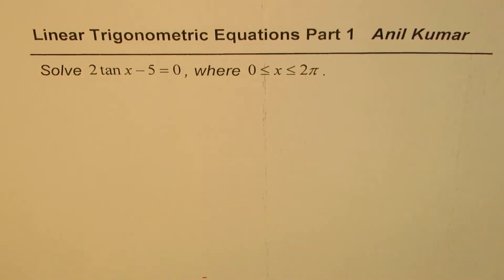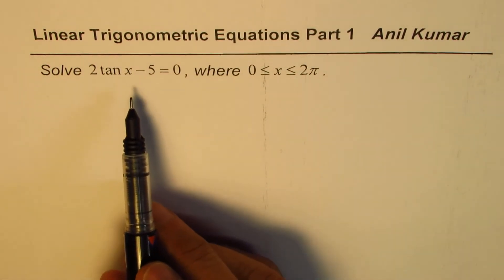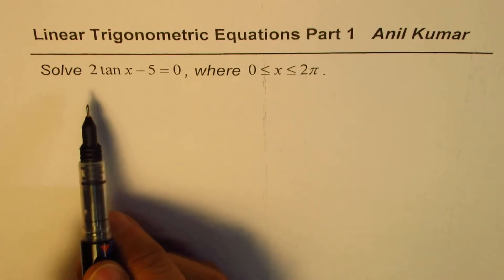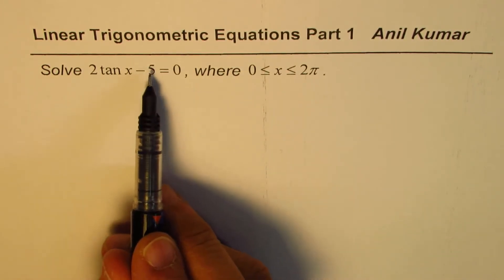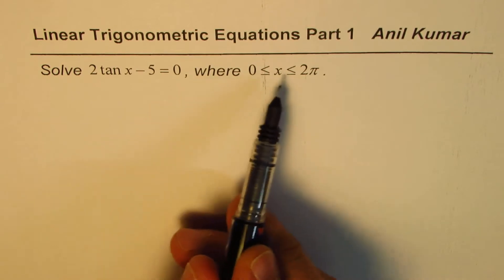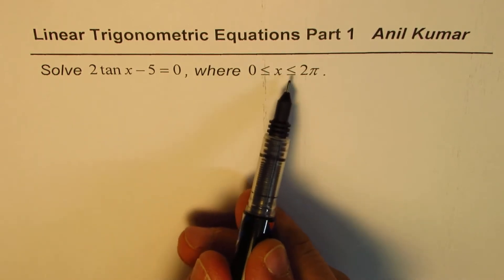I'm Manil Kumar. In this video, we will learn how to solve the linear trigonometric equation 2 tan x minus 5 equal to 0, where x is greater than or equal to 0 and less than 2 pi.